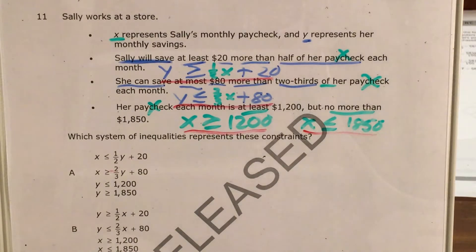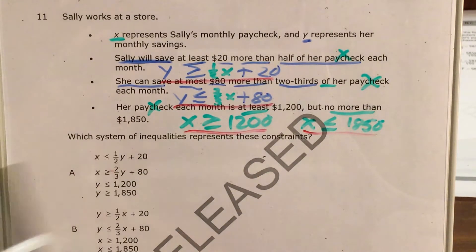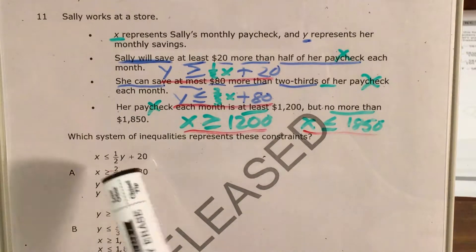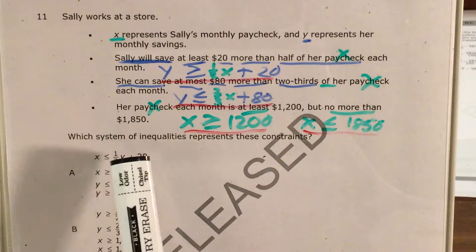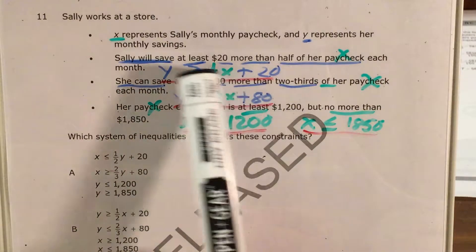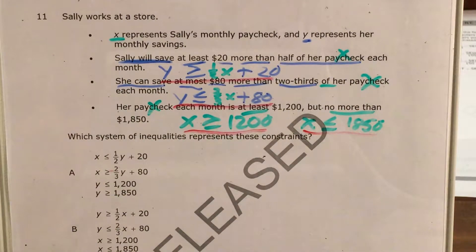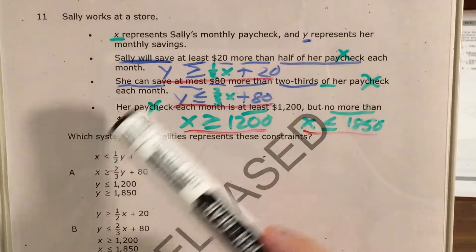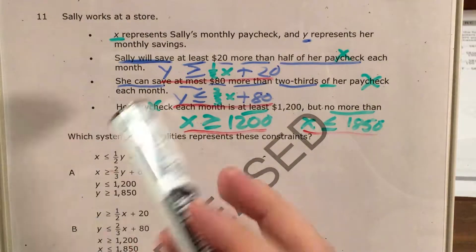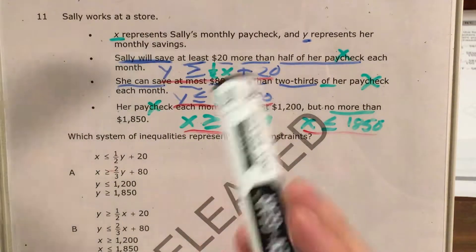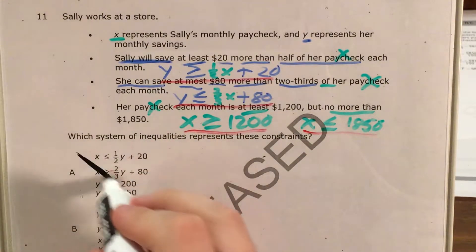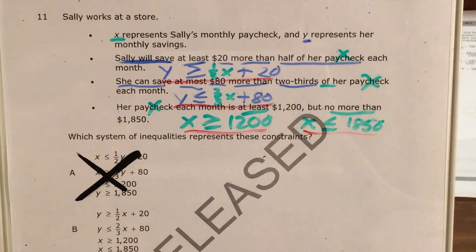Now all we have to do is look for an answer choice that matches these four equations, and I'll underline them each in red: Y ≥ ½X + 20, Y ≤ ⅔X + 80, X ≥ 1200, and X ≤ 1850. Looking at choice A, X is less than or equal to half of Y plus twenty — that looks similar to the first equation, but the sign's in the wrong direction and X and Y have switched places. So I know my answer won't be A.